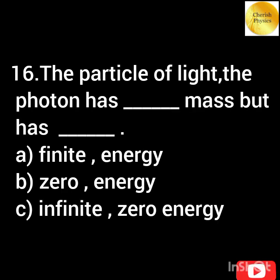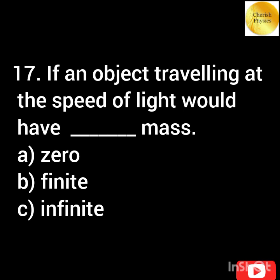The particle of light, i.e. photon, has dash mass but has dash. If an object traveling at the speed of light would have dash mass.